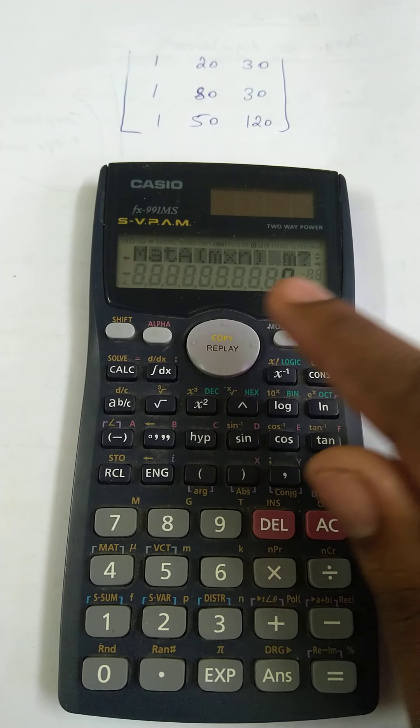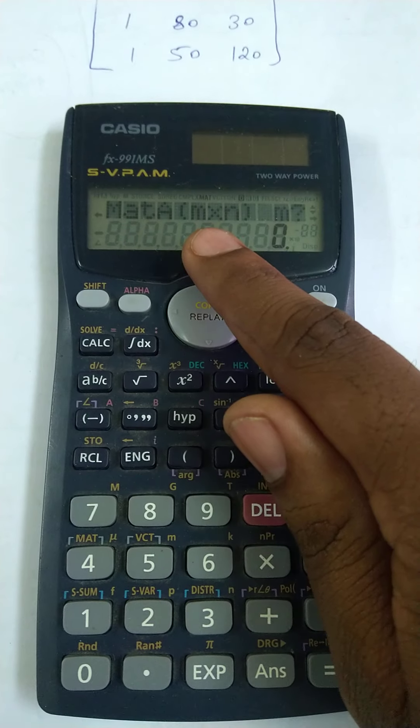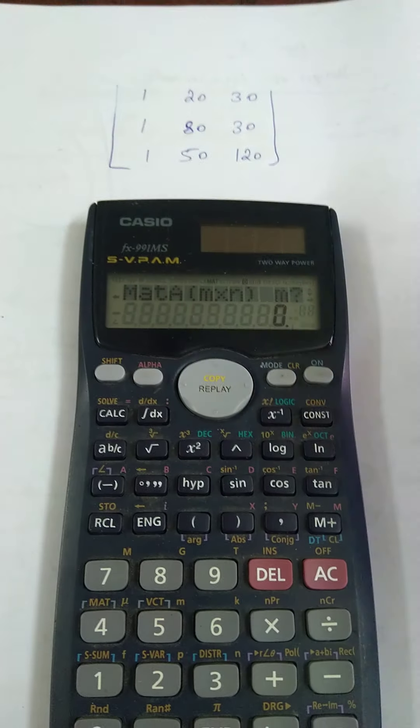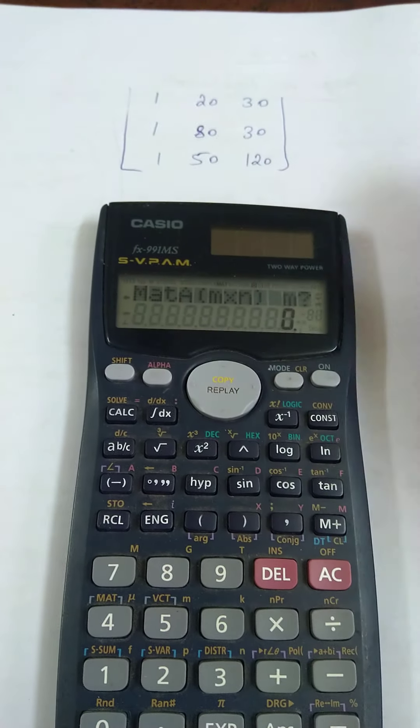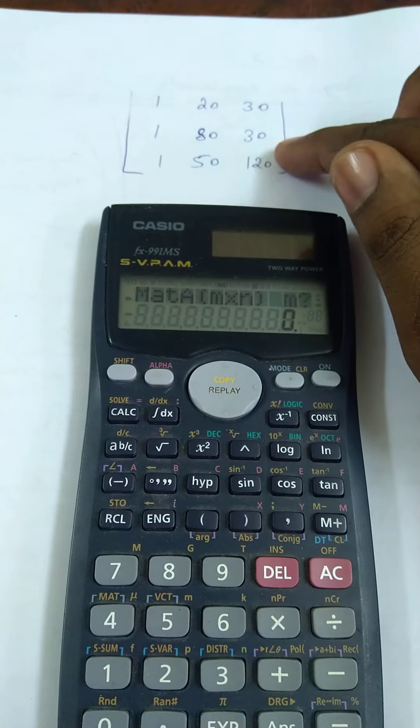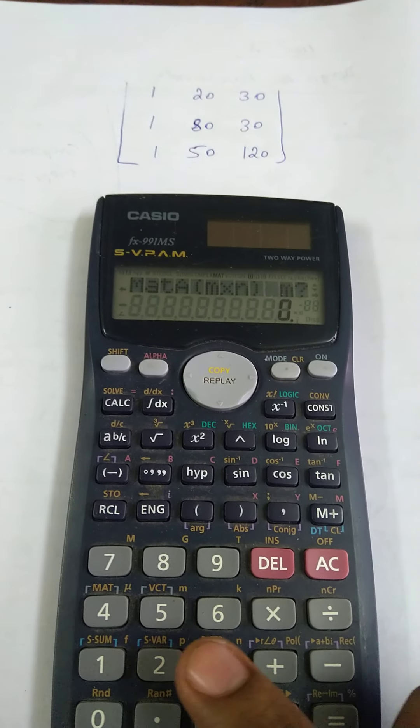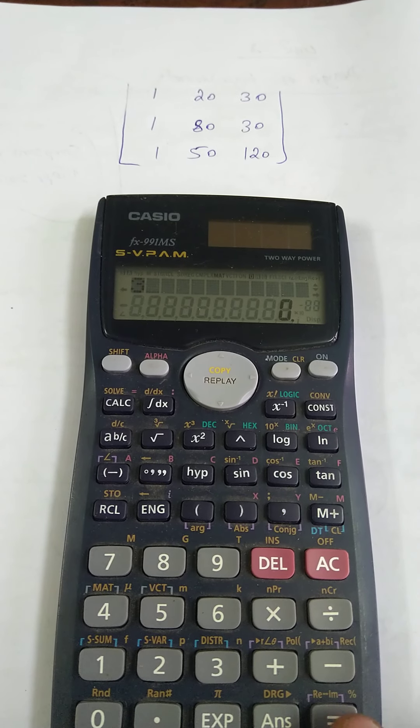Mat A is M by N. M means number of rows. In this matrix, this is row 1, this is row 2, and this is row 3, so 3 rows total. Therefore press 3 for M equals 3, then press equal.